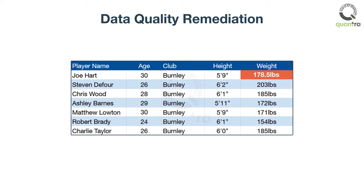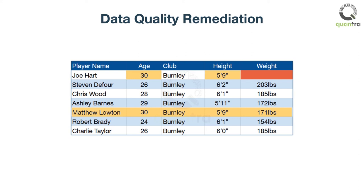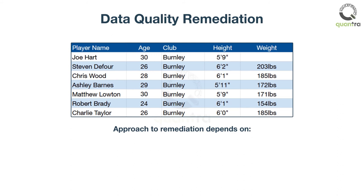There are chances that the imputed values are inaccurate. Another approach is to estimate the missing weight based on the player whose height and age is similar to Joe Hart. That is, you look at attributes that can better help in estimating the incorrect or missing value. For example, Matthew Loden has the same age and height as Joe Hart, so you can assign 171. However, not all values can be estimated from the values of other attributes. Thus, the approach to remediate data quality issues depends on the type of data you are dealing with and the domain understanding of the data.